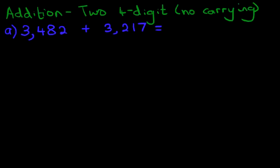Now we're going to do this using the vertical format. So let's rewrite the question in columns. Let's do that over here. 3,482 plus 3,217.